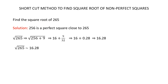Find the square root of 265. Since 256 is a perfect square close to 265, write the square root of 265 as the square root of (256 + 9), because 256 + 9 = 265. The square root of 256 is 16. Write the plus sign, place 9 in the numerator, and multiply 16 by 2 to get 32 in the denominator. Now we have 16 + 9/32. Since 9/32 = 0.28, we get 16 + 0.28 = 16.28. So the square root of 265 is approximately equal to 16.28.